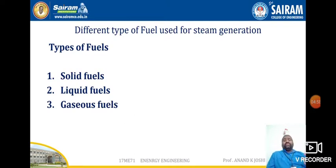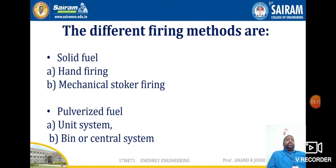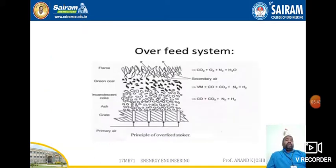Fuels can also be categorized as natural or artificial, but we will not go much into that. In this module, we are going to concentrate on solid fuels. For solid fuel such as coal, there are different types of firing methods: hand firing and mechanical stoker firing. Another category is pulverized fuel, which includes unit type and bin or central systems. These are all different firing methods used for thermal power plants where coal is used as fuel.